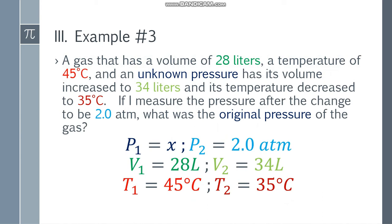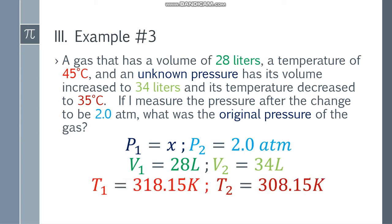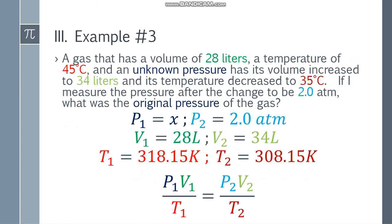Since our temperatures are in Celsius, we need to convert to Kelvin. Adding 273.15 gives 318.15 Kelvin for the initial temperature and 308.15 Kelvin for the resulting temperature. Now both sides are in Kelvin and liters — they have the same units — but always make sure temperature is in Kelvin before solving. Let's place the formula: P1 V1 over T1 is equal to P2 V2 over T2.